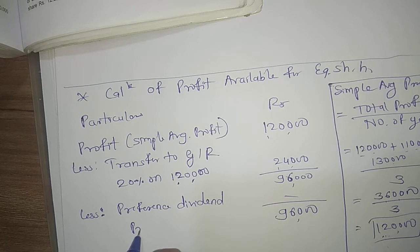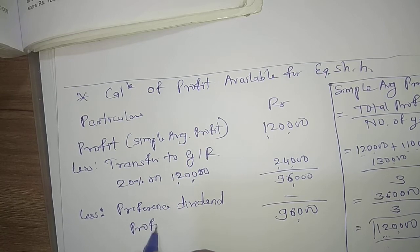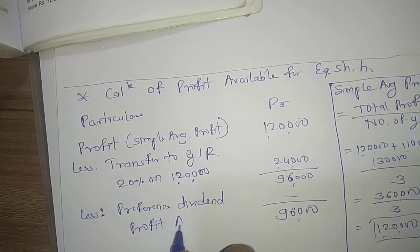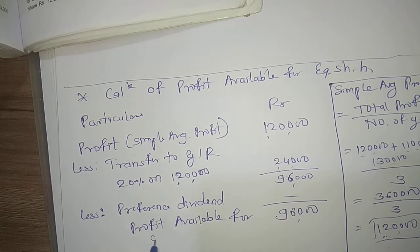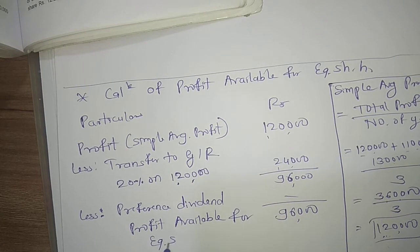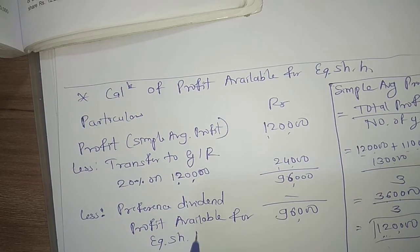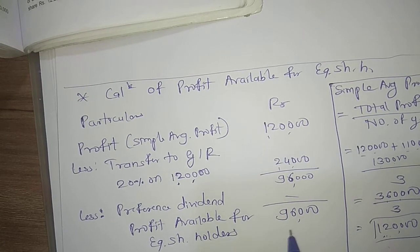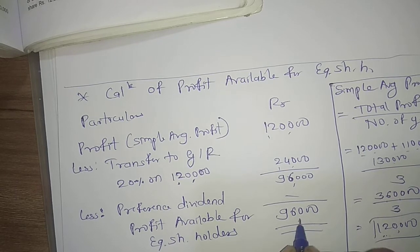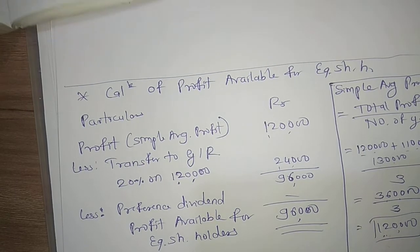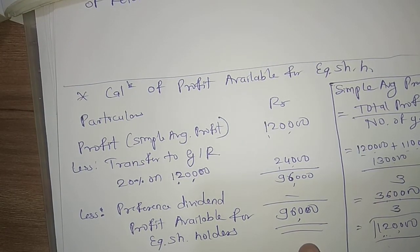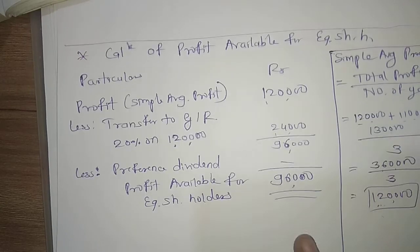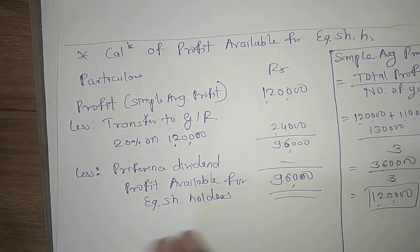There is no preference share capital in this problem, so no preference dividend to deduct. Therefore, profit available for equity shareholders is 96,000.